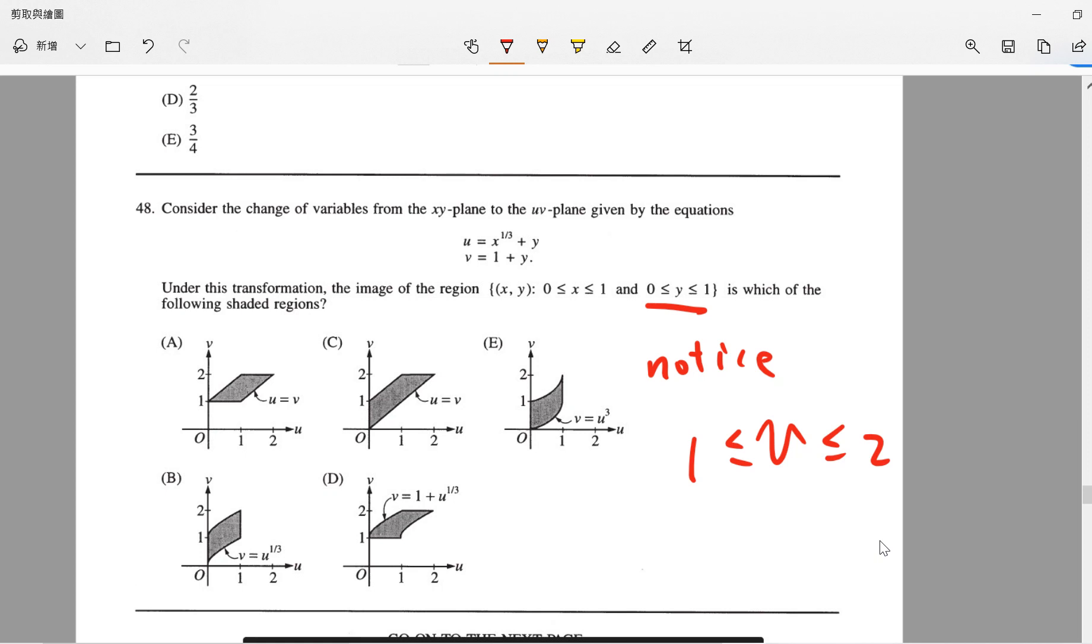So you need to find which diagram has v only from 1 to 2. So this looks okay, this is not good, not good, not good. All we remaining is A and D.